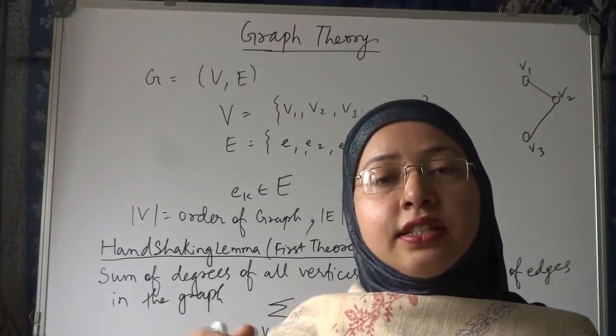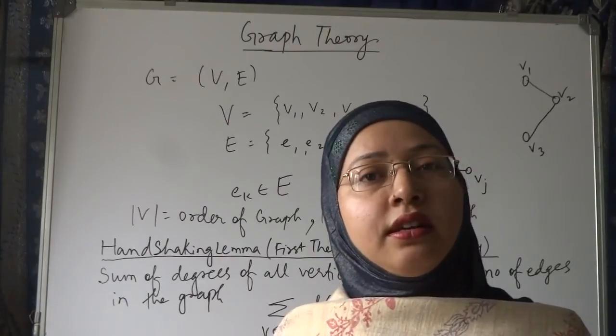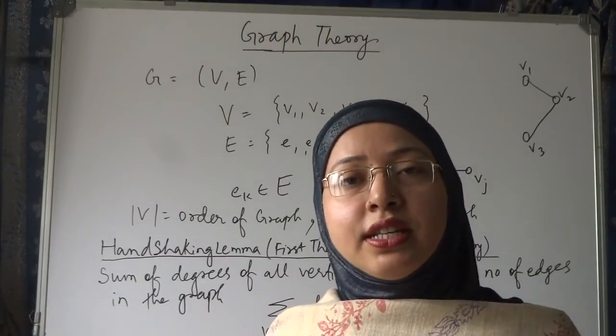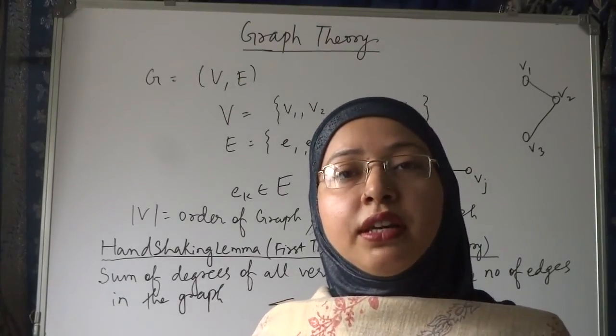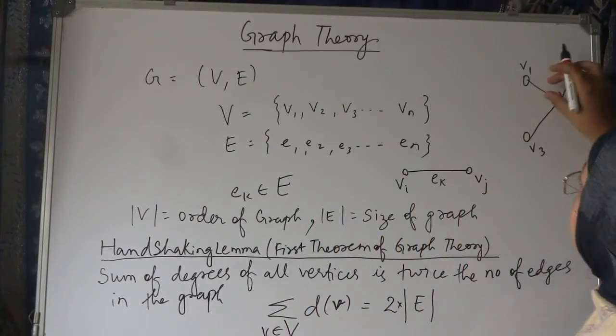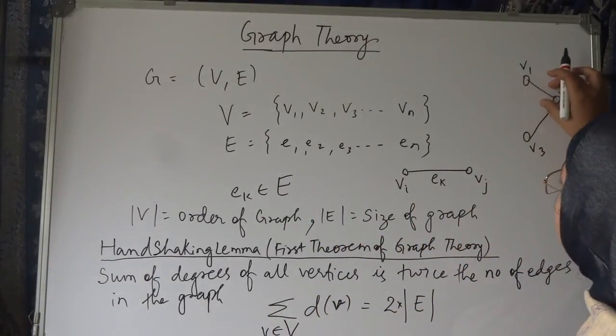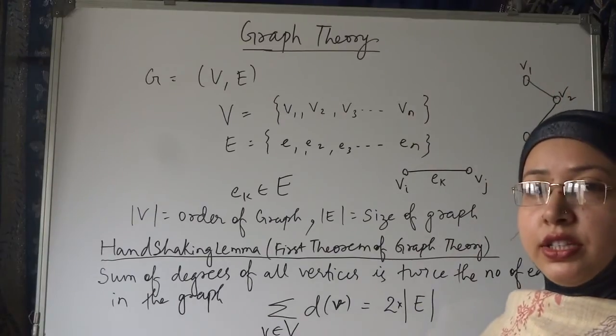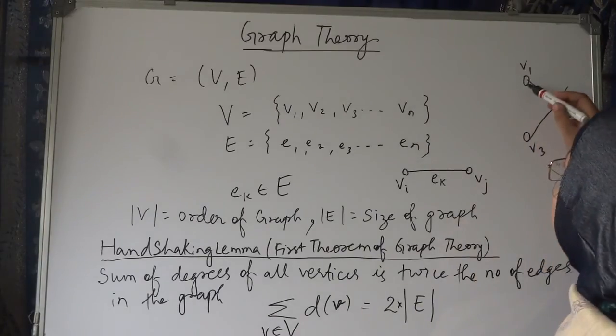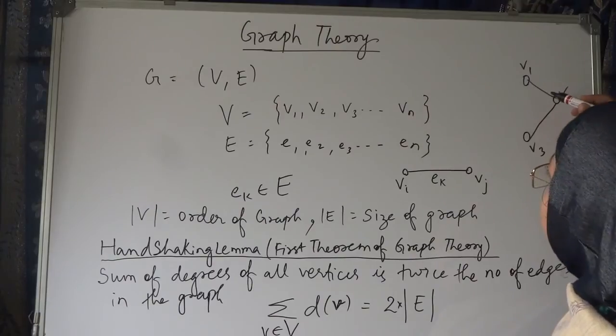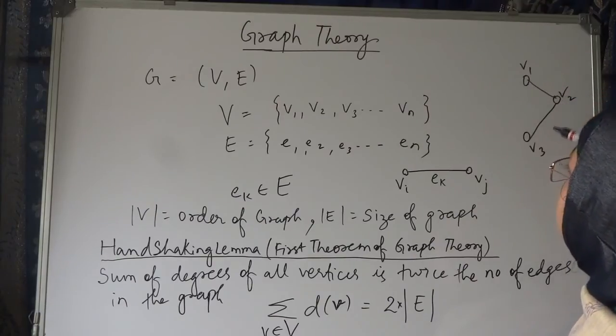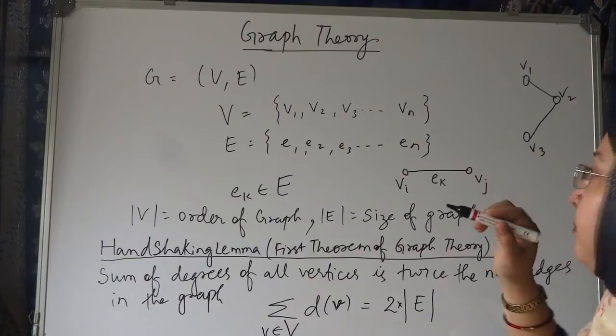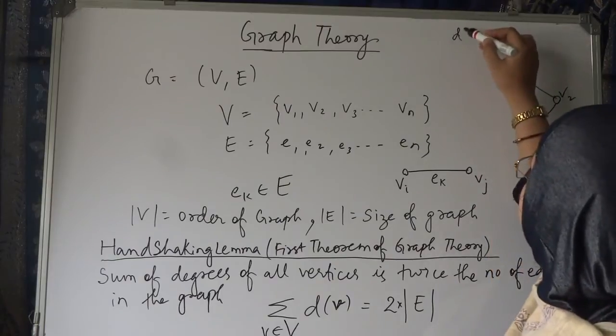The edges incident on that node is known as its degree—the number of edges coming out or coming in from that node. Here, because there is no direction provided, we will consider it as only one edge. So the degree of v1 is 1, degree of vertex v2 is 2, degree of vertex v3 is 1.